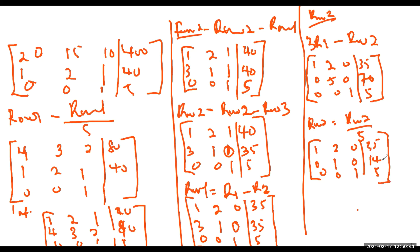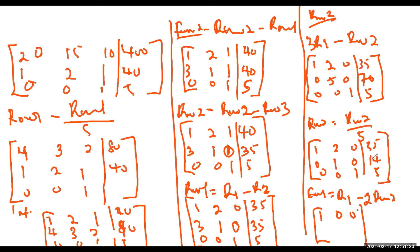We can see that row 2 is now 0, 1, 0, which is what we want. We are left with row 1. We compute row 1 minus 2 times row 2: 1−2×0=1, 2−2×1=0, 0−2×0=0, 35−2×14=35−28=7. So row 1 becomes 1, 0, 0 | 7. Matrix A has now been fully converted to an identity matrix.